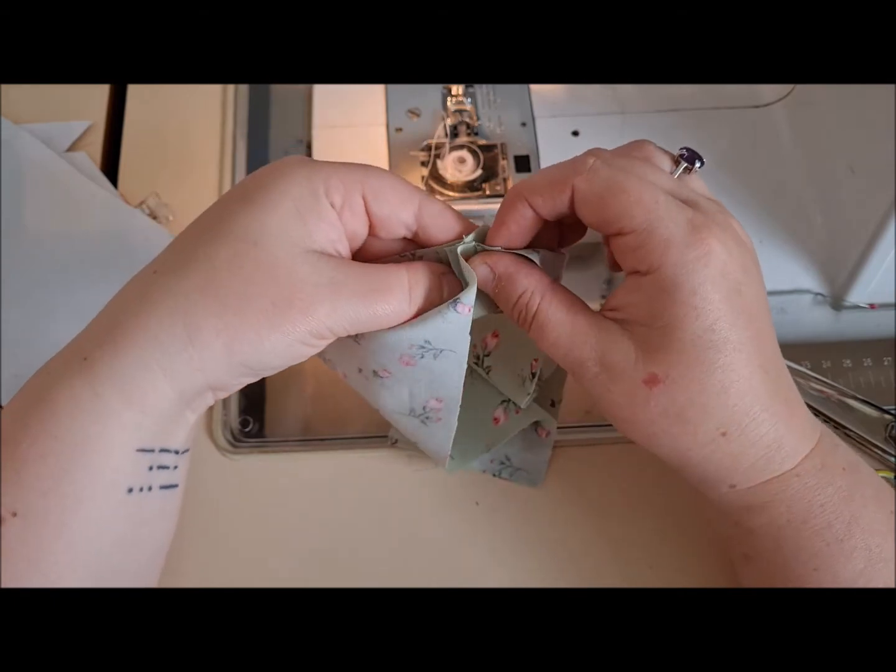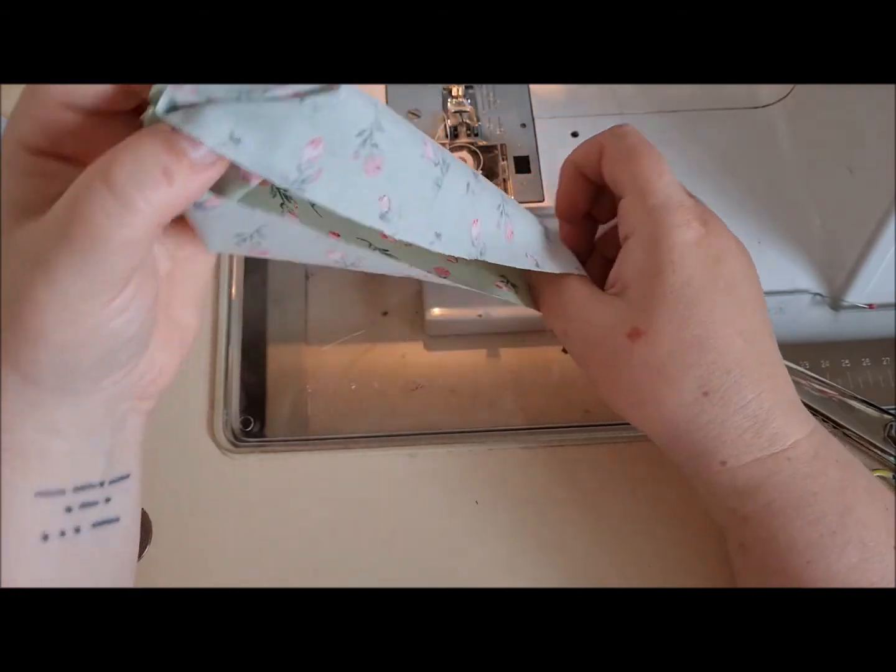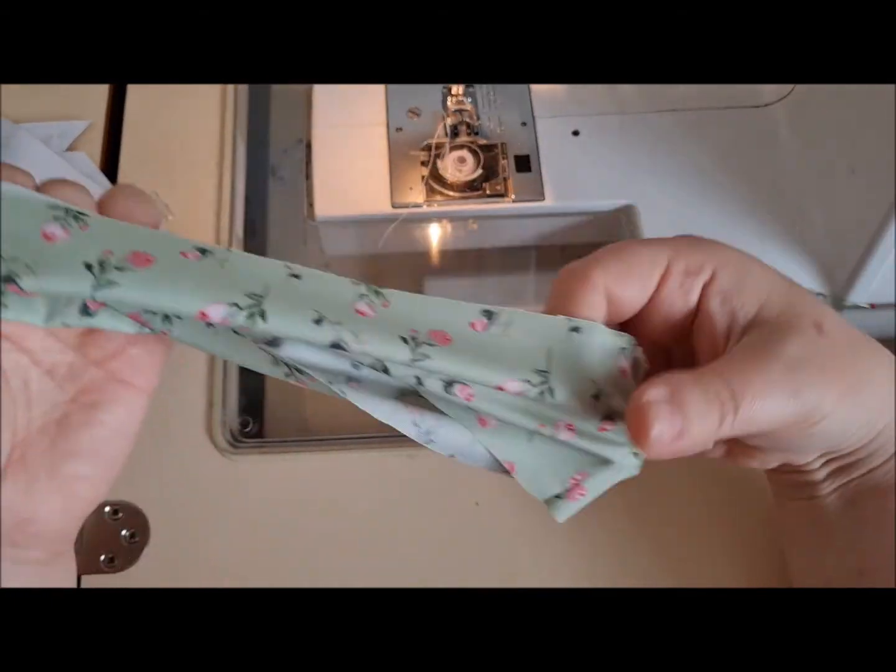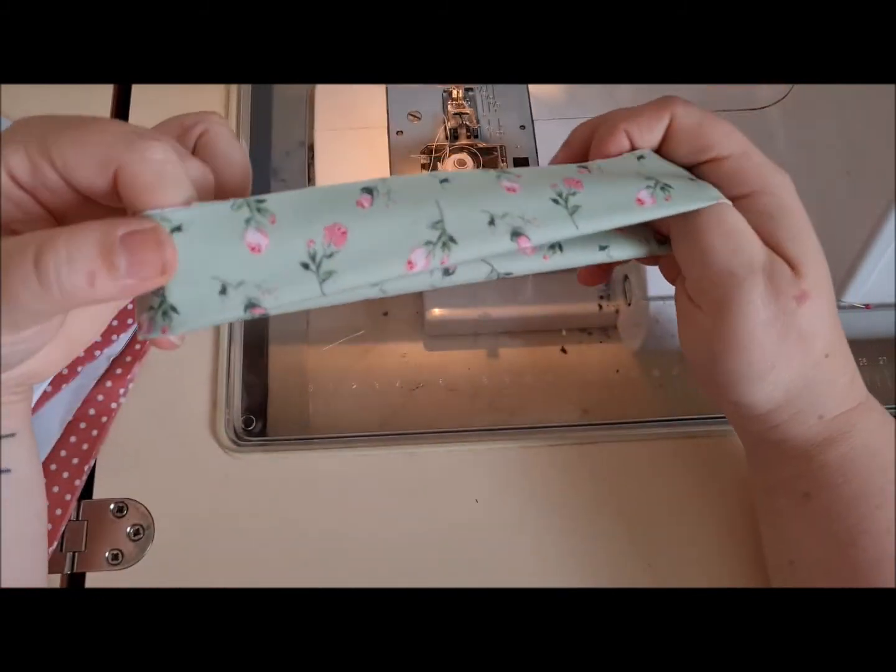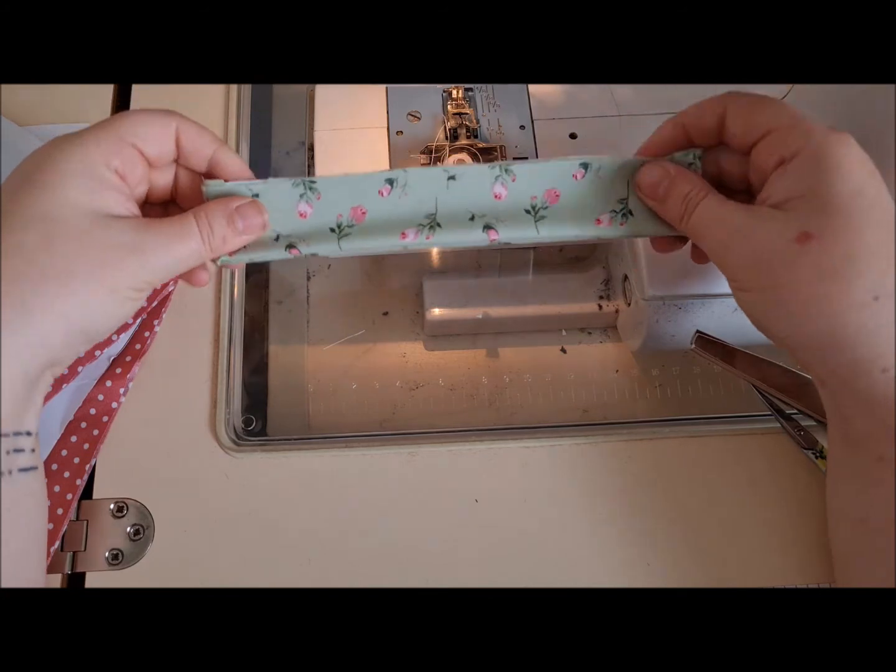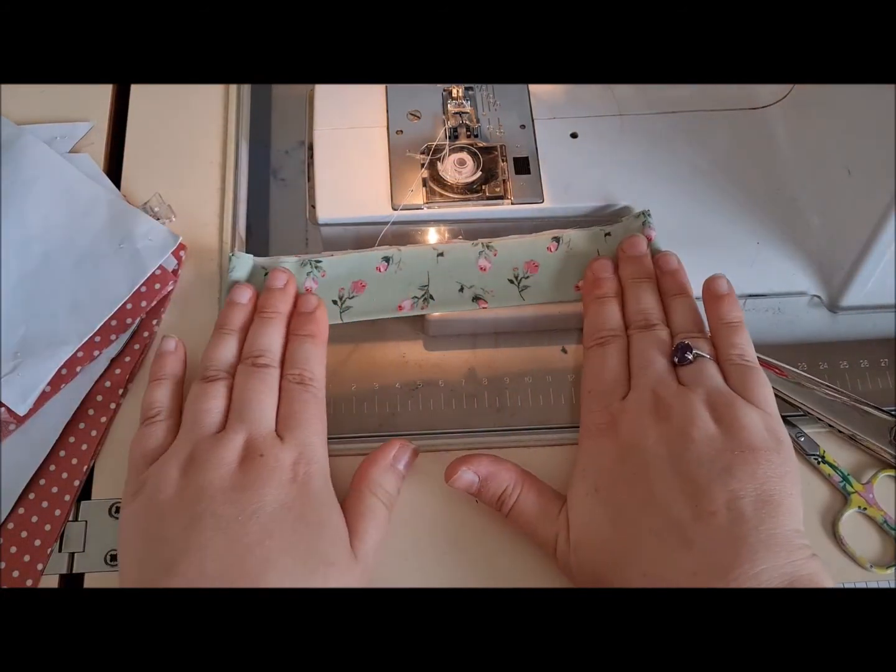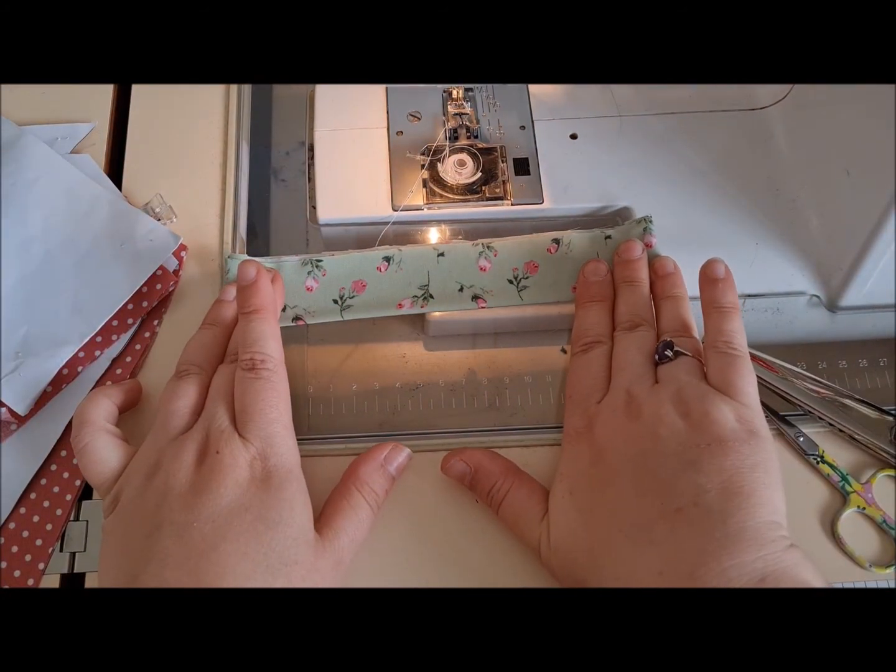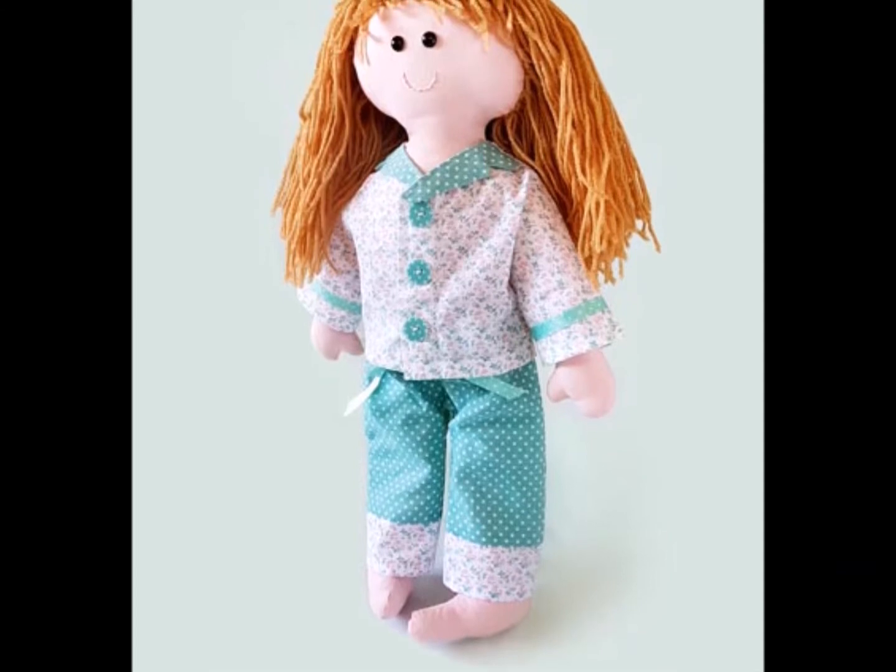Then what we're going to do is we're actually going to take this loop and decrease the width by half by folding it raw sides together, literally just like that. Give that a press with your iron and then we're going to set that one aside for later.